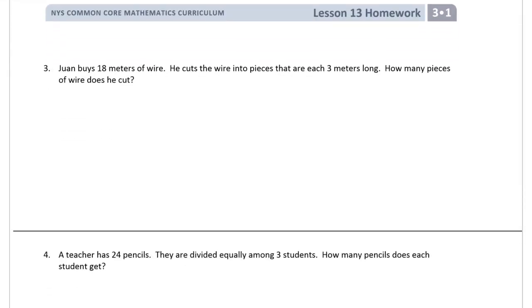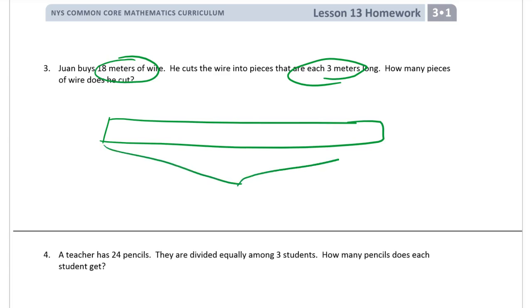Juan buys 18 meters of wire. He cuts the wire into pieces that are each 3 meters long. How many pieces of wire does he cut? Here's our piece of tape. The whole thing is 18 meters. And we know that the pieces are each 3 meters long. But what we don't know is how many pieces.